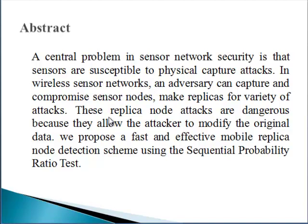In this work, we propose a fast and effective mobile replica detection scheme. Using the sequential probability ratio test, we show analytically and through simulation experiments that our scheme detects mobile replicas in an efficient and robust manner at the cost of reasonable overheads.